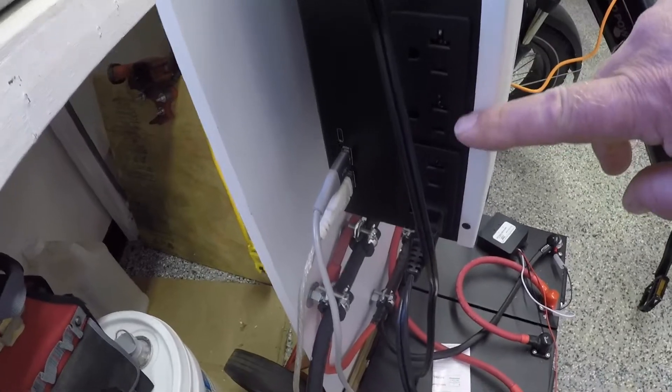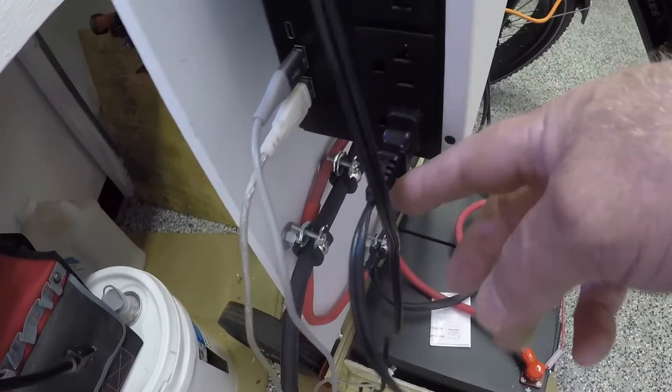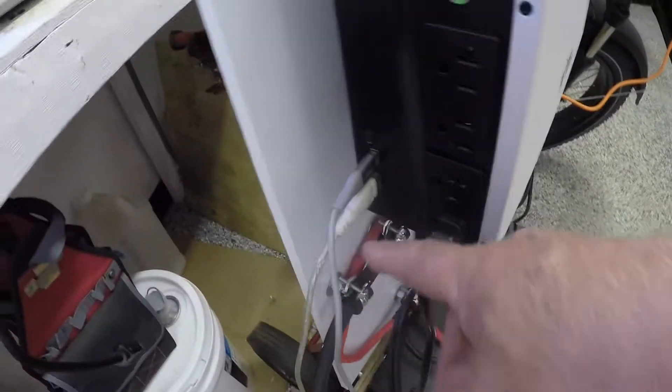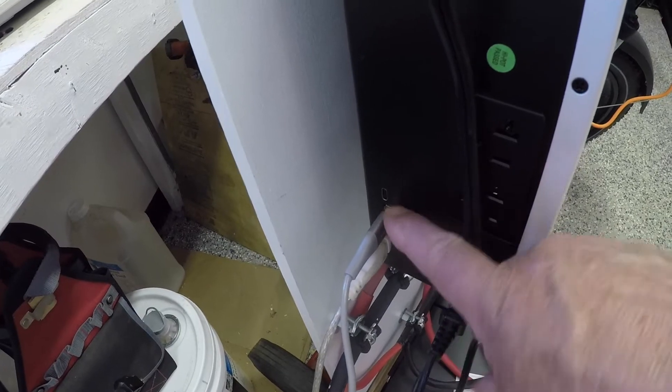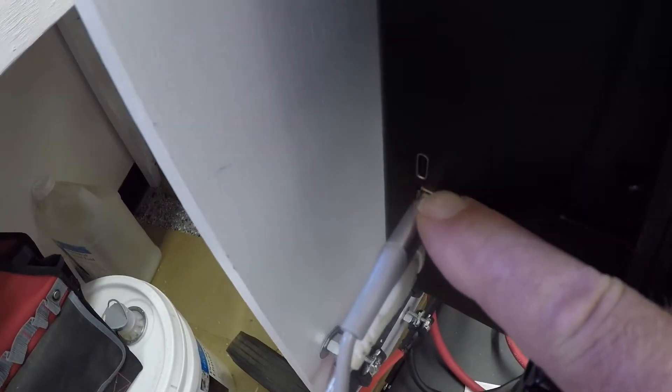On the side of this, it does have four 20-amp receptacles, and we are plugged in one charging up this e-bike. It also has some USB ports, two A-type and one C-type USB.